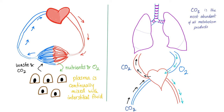Now let's go to the lungs. All the CO2 and waste products go back to the heart. The heart pumps them in a pulmonary artery, sending CO2 to the lungs. The lungs breathe out the CO2 — called exhalation — and breathe in the oxygen — called inhalation. Oxygen then goes to the blood and the cycle goes over again. CO2 is the most abundant of all metabolic products.